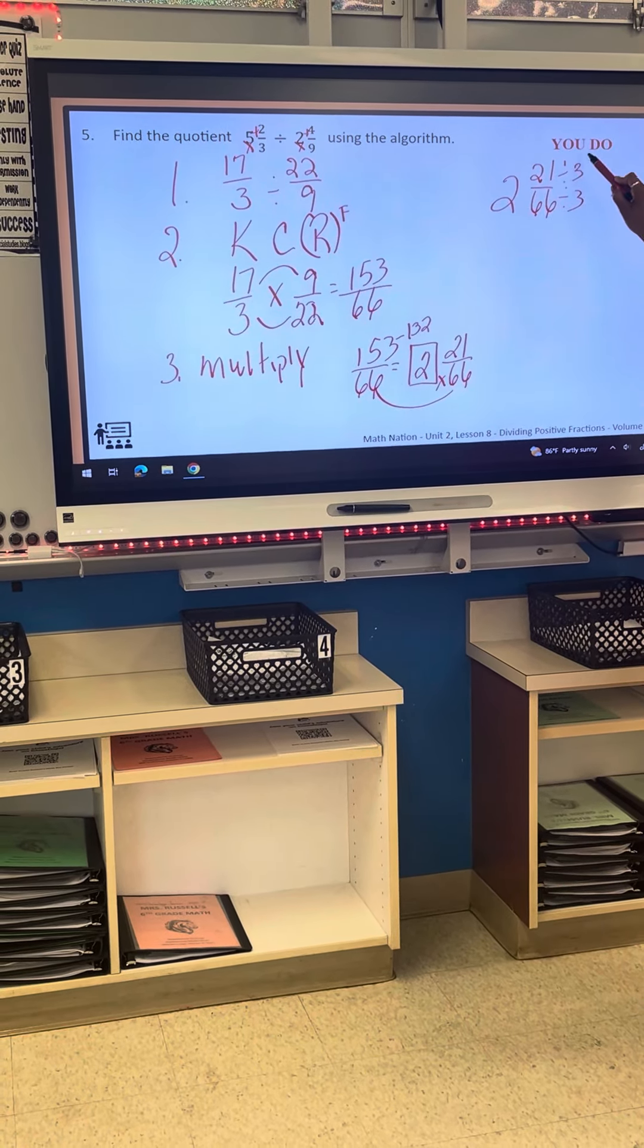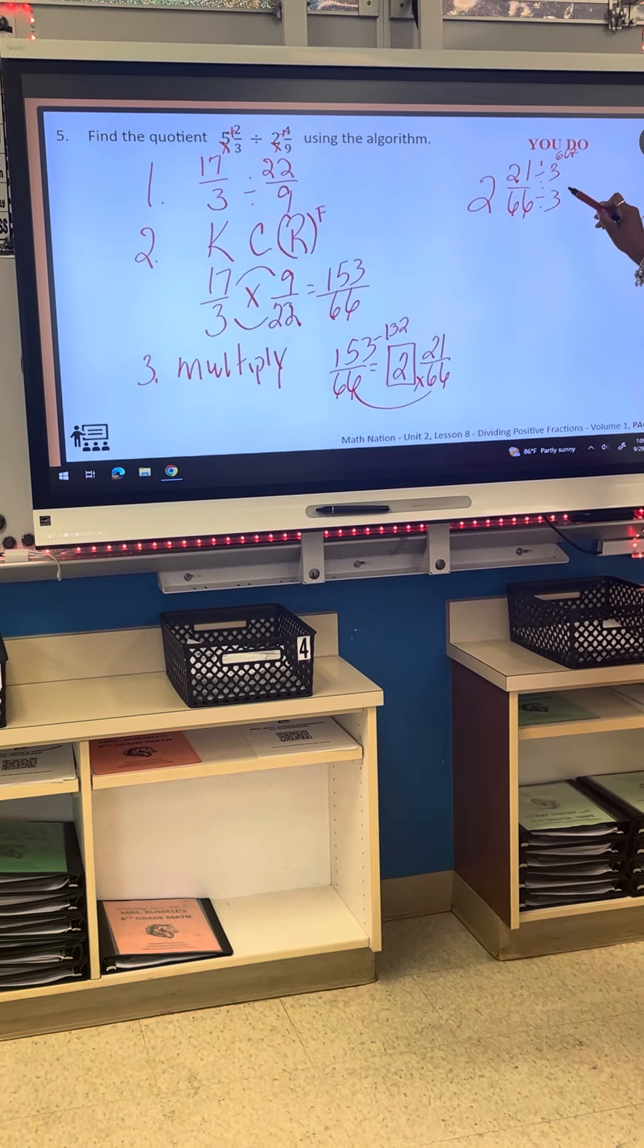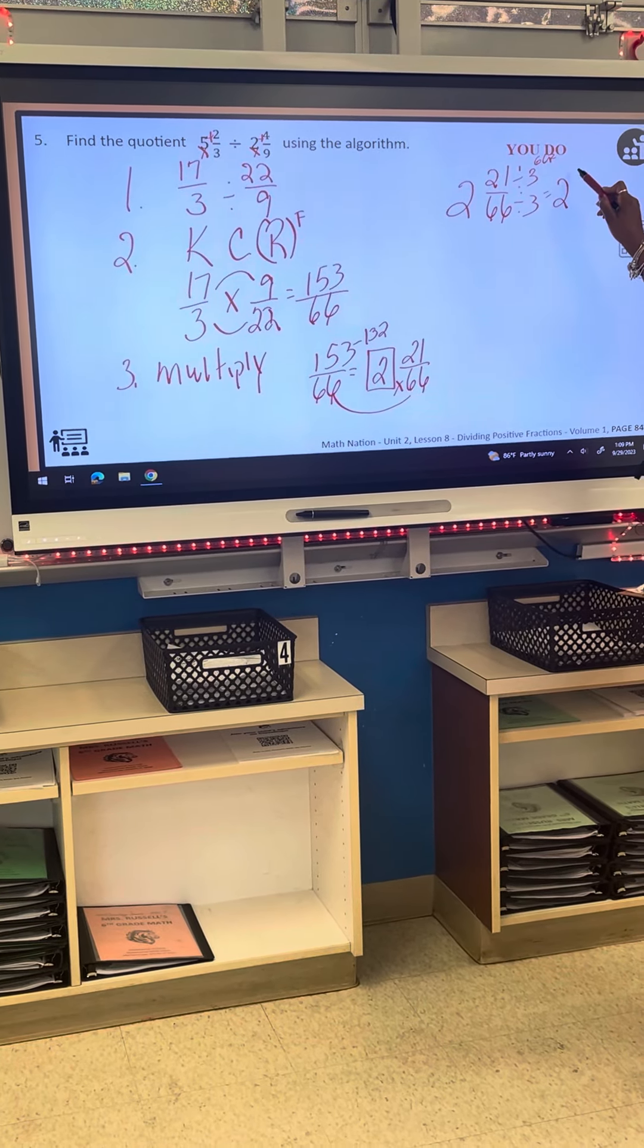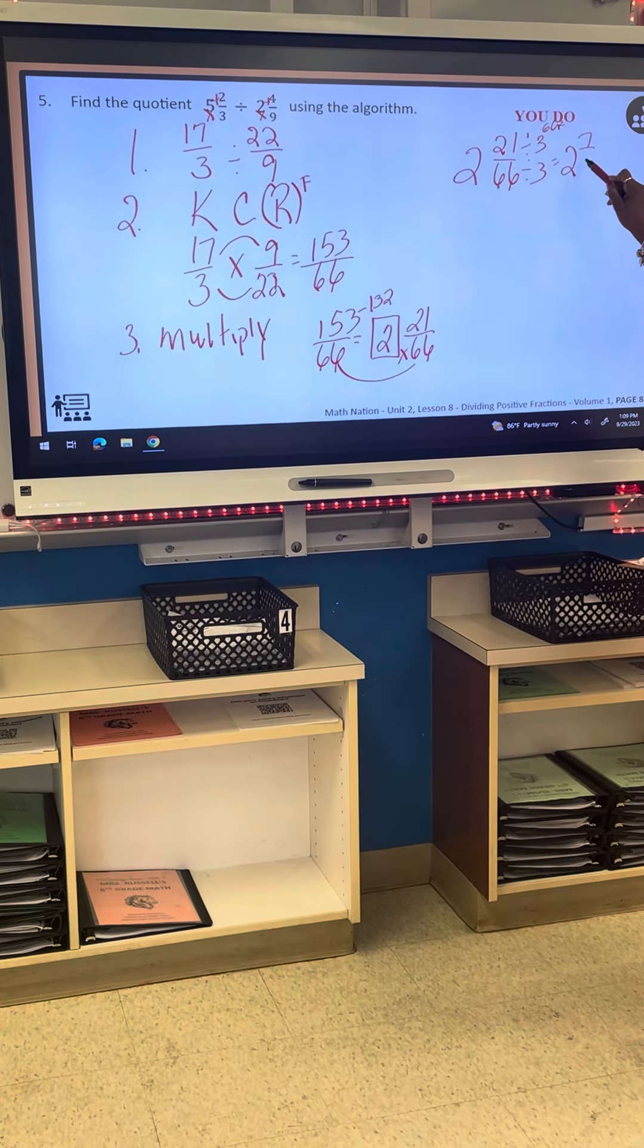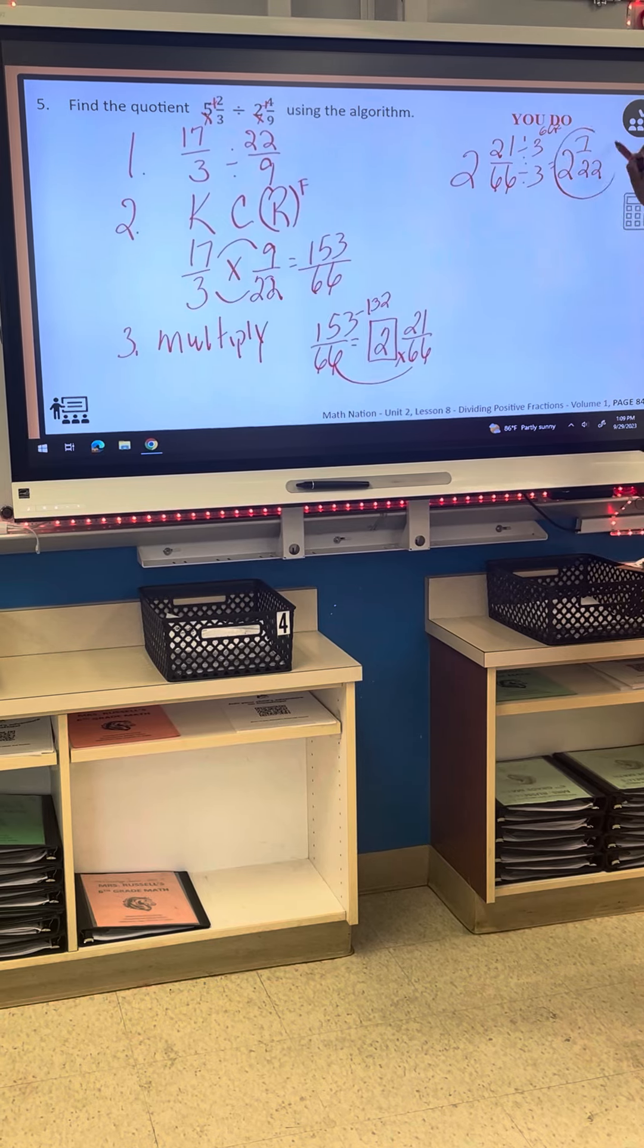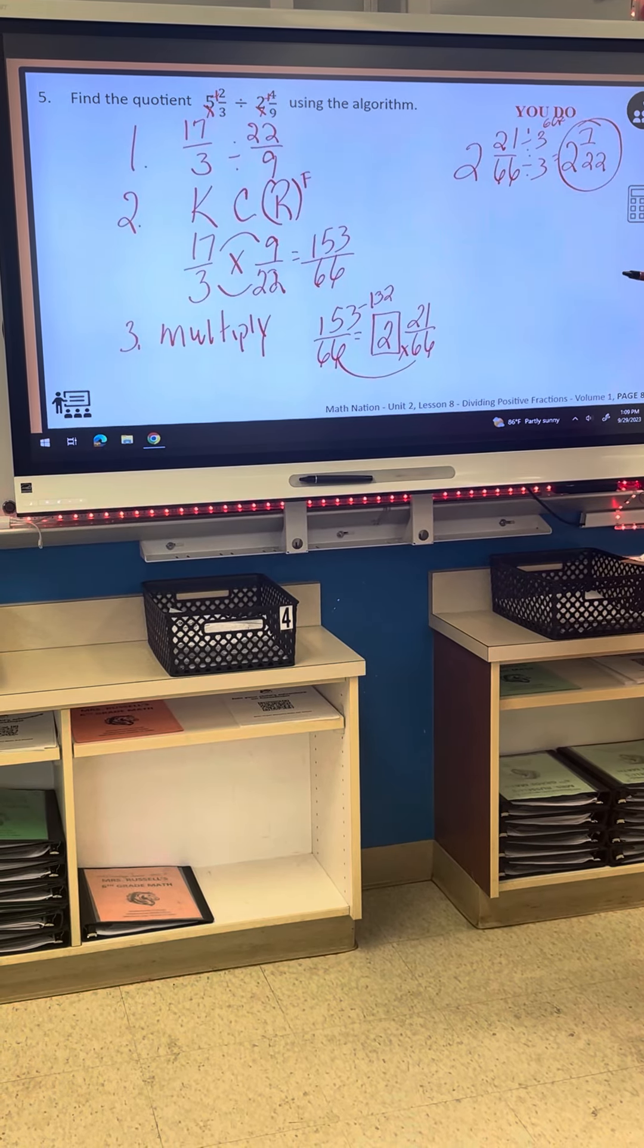So here we go. Let's see our GCF. So we have two and this is what? Twenty-one divided by three is seven. And sixty-six divided by three is twenty-two. So that's our answer. Everybody good? Yes.